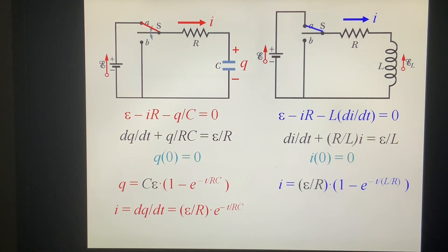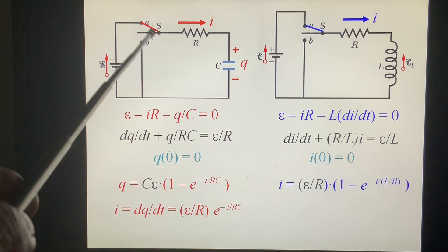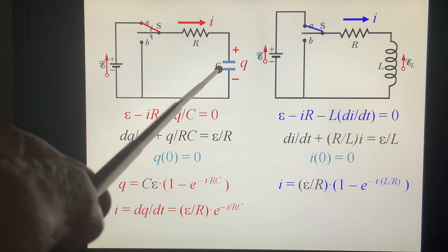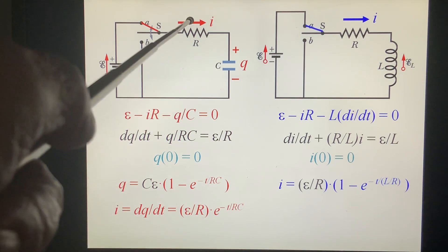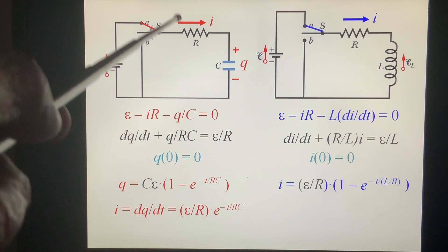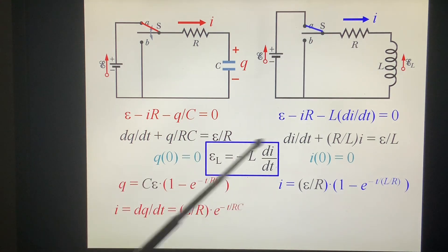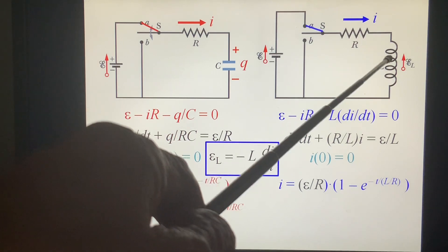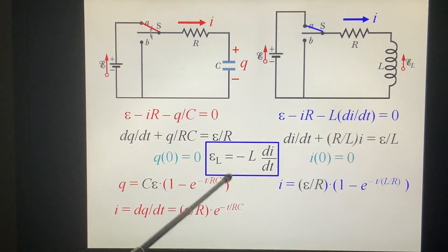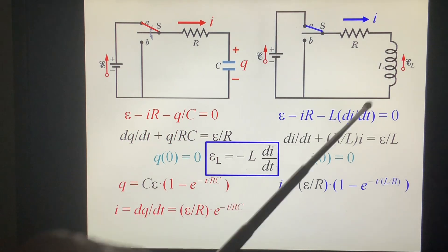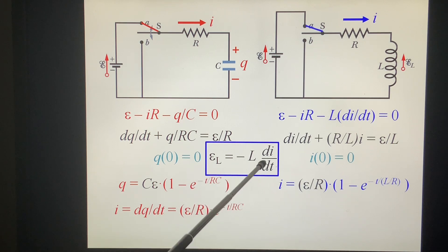At the beginning, the resistance is very large. Q is 0, and then with charging, the effective resistance gets smaller and smaller. Finally I equals 0 and the charge reaches its maximum C·epsilon. The self-induced electromotive force equals minus L dI/dt. So epsilon equals L dI/dt relative to dI/dt, and we find it equals epsilon minus IR.